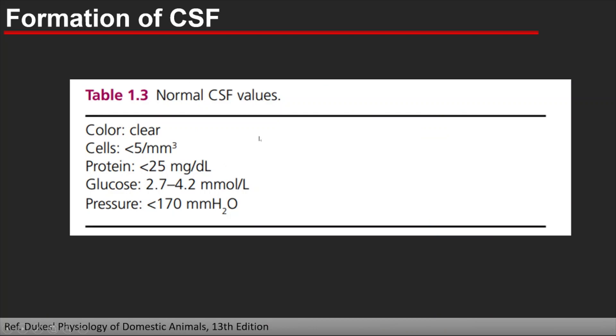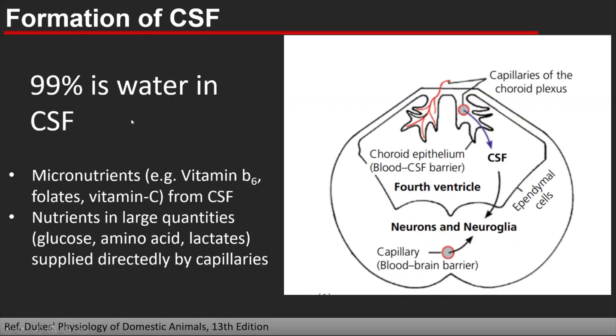The normal CSF values: cells, protein, and glucose 2.7 to 4.2 millimol per liter, pressure less than 170. These are the normal values.